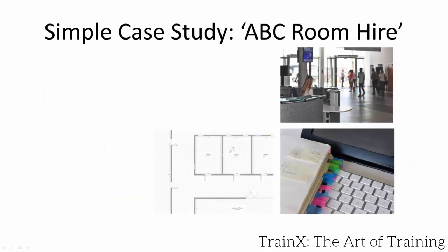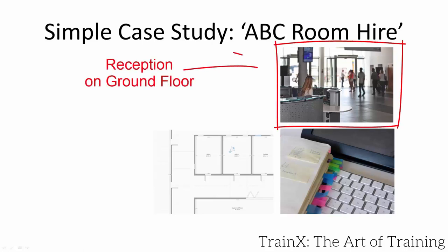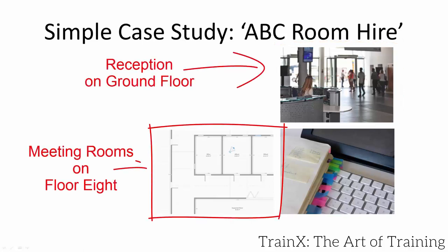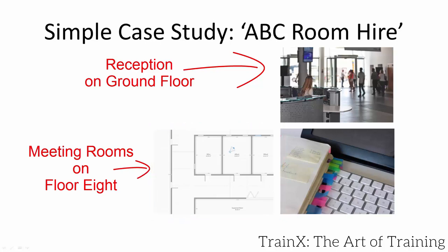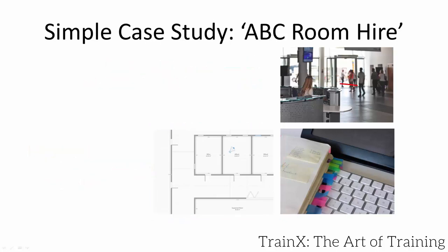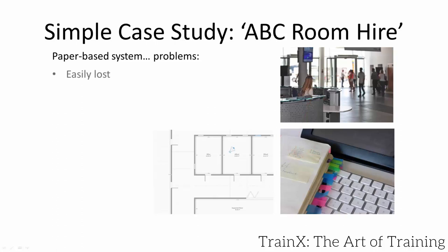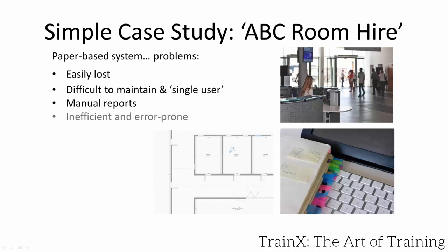ABC Room Hire provides meetings and IT training rooms by the hour. The ground floor reception is shared and their meeting rooms are on floor 8. The only way to book a room is to phone or walk up to reception, discuss your requirements, look at the paper-based planner and make a note in their diary. This has obvious problems being a single-user manual system. The room administrator, based on floor 8, constantly has to visit reception to check the schedule and work out how to resource the rooms. Agile PM can solve ABC's problem.